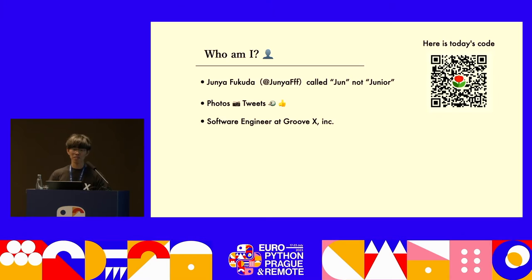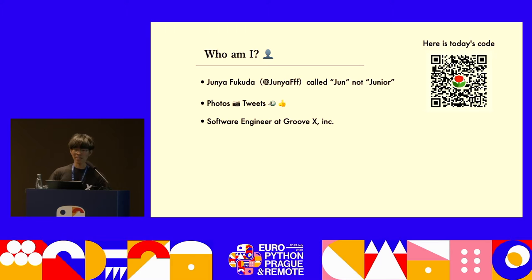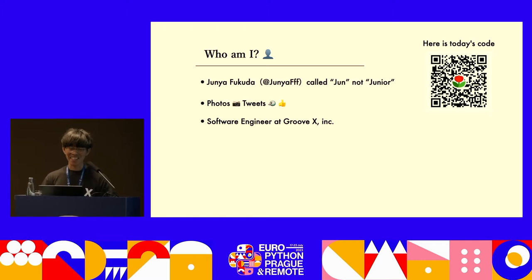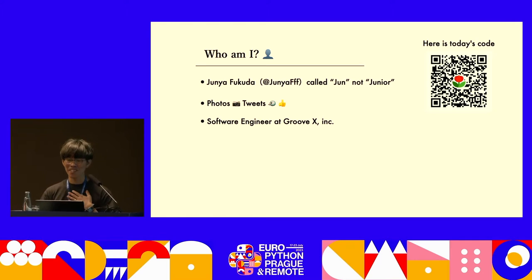My name is Junya Fukuda from Nagano in Japan, and you can find me on Twitter as Junya FFF. In English, my name often gets confused with Junior, but it's not Junior, it's Junya. If it's hard to pronounce, feel free to call me Jun.